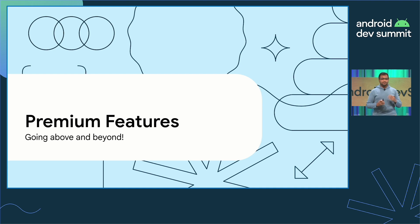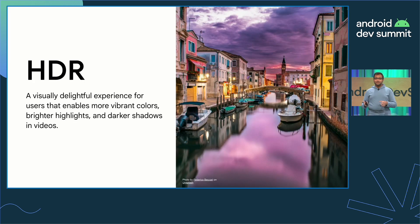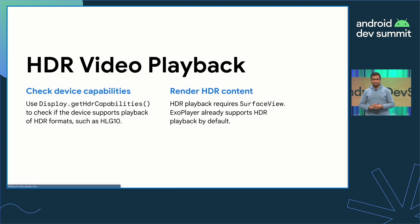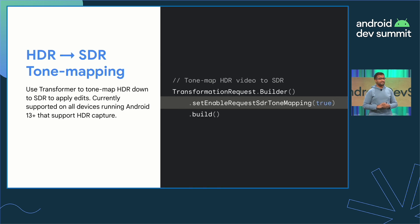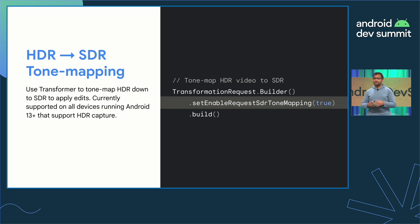Android 13 introduced standardized platform support for HDR, including APIs for capture, sharing, editing, and playback. For playback of HDR video, you can use display.getHDRCapabilities to check which HDR profiles the device supports. To play HDR video, you'll need to render your content to a SurfaceView — TextureView will only display video in SDR. ExoPlayer is the recommended way to play HDR video since its default UI components already use SurfaceView. For any use cases where you need to convert HDR video to SDR, you can use Transformer by enabling the SDR tone mapping flag when building the transformation request. This will currently work on devices that support HDR capture, but we're working on extending this functionality to devices that don't support HDR capture as well.